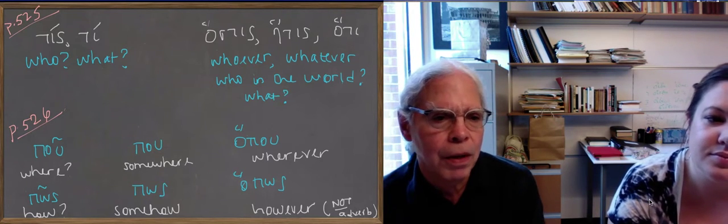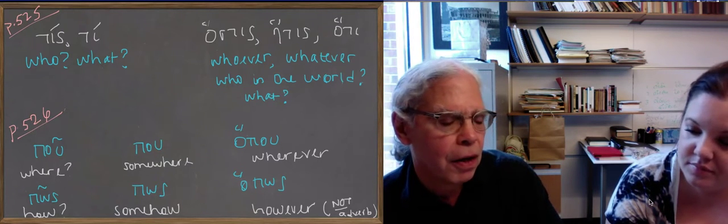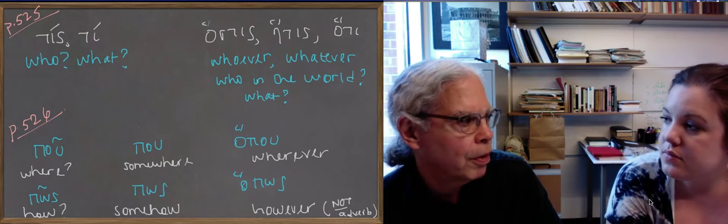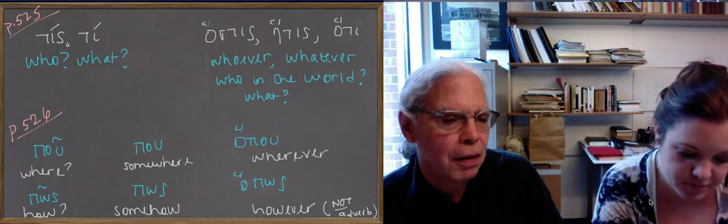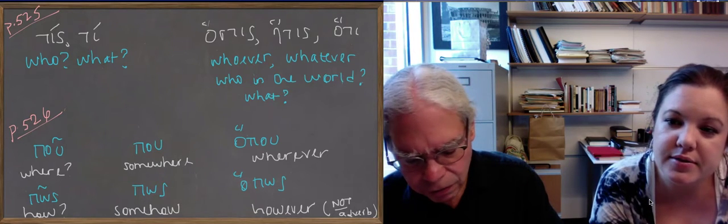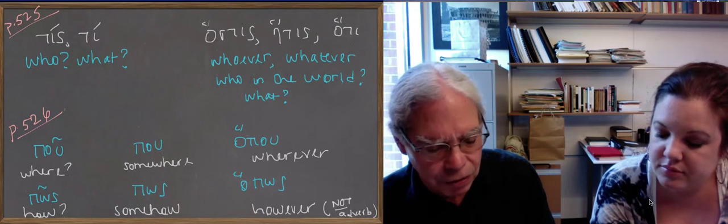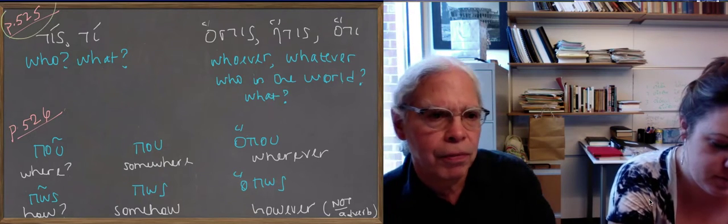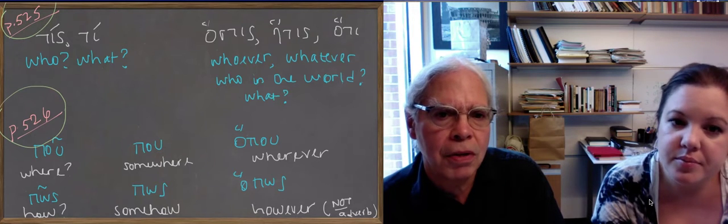So, and then the next thing the book shows you is, there's a sequence of words, of interrogatives, and the indirect forms that you have of them in Greek. Greek doesn't always use them, but they're there. There's a chart on page 525 of direct and indirect interrogatives, like tis, ti, versus hostis, hati, hati, hati.